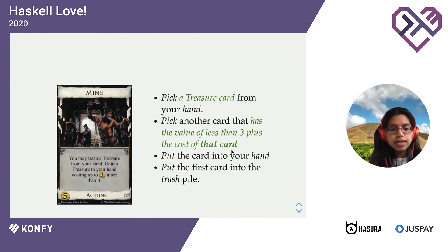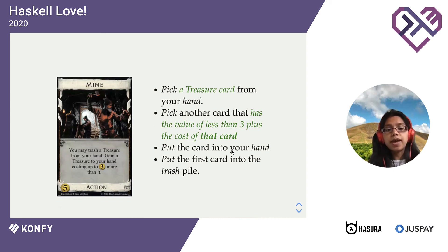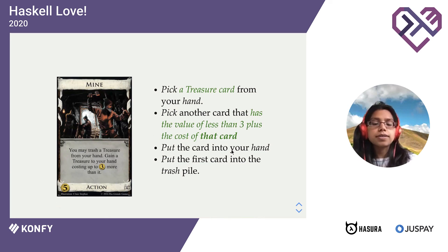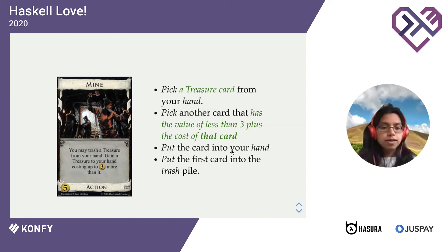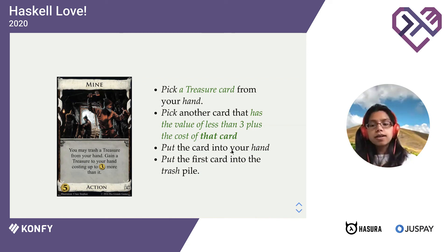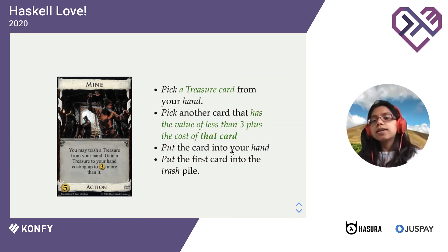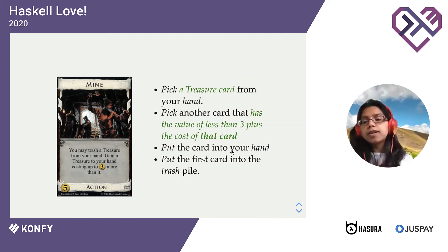Okay, so let's consider this card, the mine card. You may trash a treasure card from your hand and gain a treasure to your hand, costing up to three more than it. We can decompose this into a few statements. One is that we need to pick a treasure card from our hand — we've written a statement for pick already. We need to pick another card that has the value of less than three plus the cost of the original card that we picked. We then need to put that card into our hand and put the first card into a trash pile. The most interesting part of this statement is that we are referring to a card that we picked up previously — in other words, we have a variable in here.